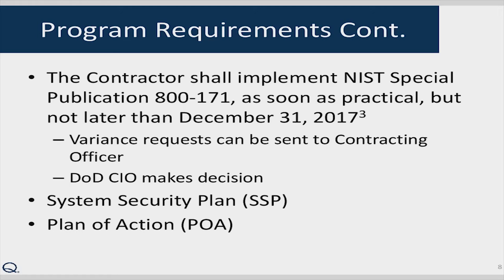Part of the program requirements were that contractors should implement NIST Special Publication 800-171 controls as soon as practical, no later than December 31, 2017. There is a clause that says variance requests can be sent to the contracting officer and the DOD CIO makes the decision. We did not submit a variance request, but most of the information you need can be found in your system security plan and plan of action.